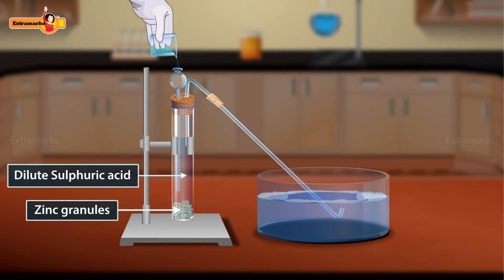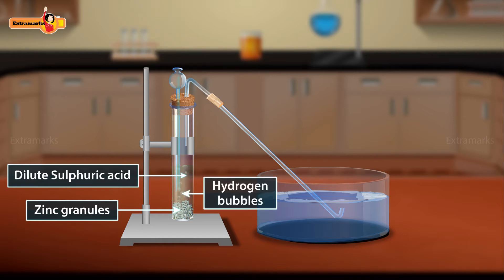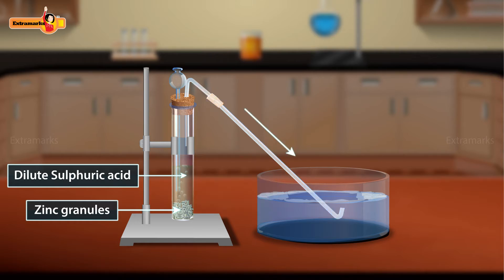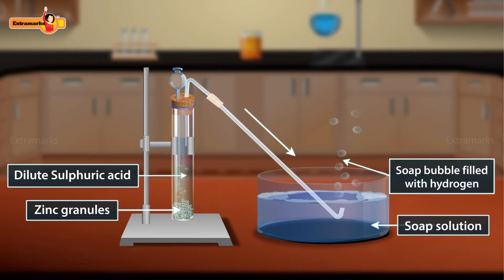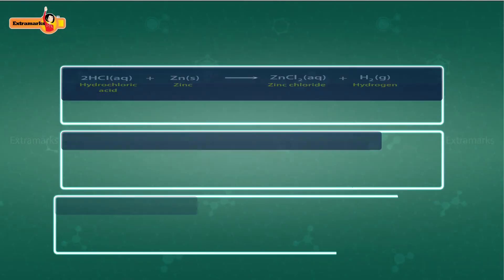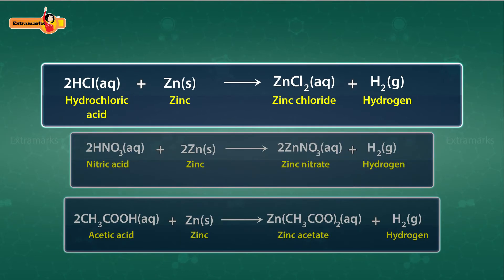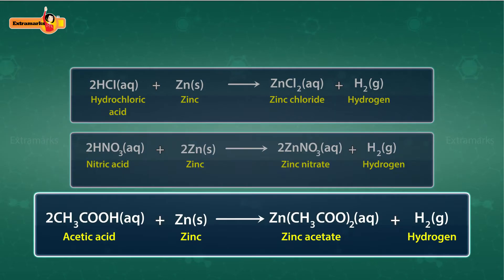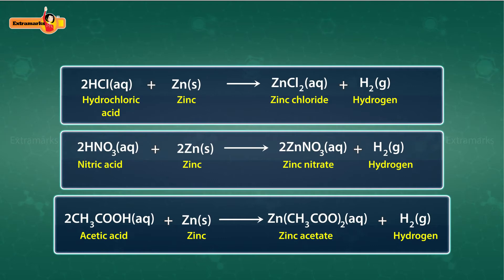Take some zinc granules in a test tube and add some dilute sulfuric acid to it. Notice the evolution of gas bubbles on the surface of the zinc granules. Pass this gas through the soap solution — bubbles of gas can be seen. When a burning candle is brought near to the evolved gas, a pop sound is heard, which indicates the presence of hydrogen gas. Similarly, hydrochloric acid, nitric acid, and acetic acid also react with zinc to form the corresponding zinc salt and hydrogen gas.